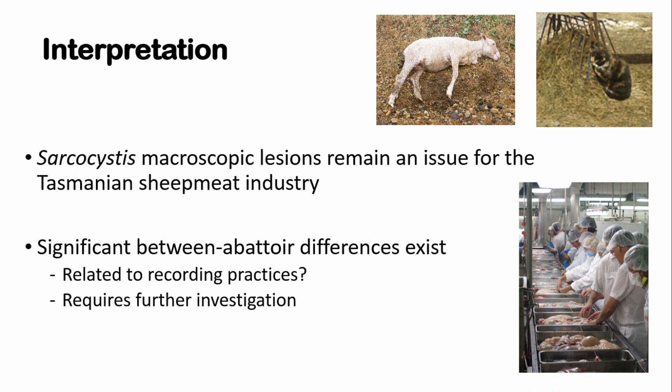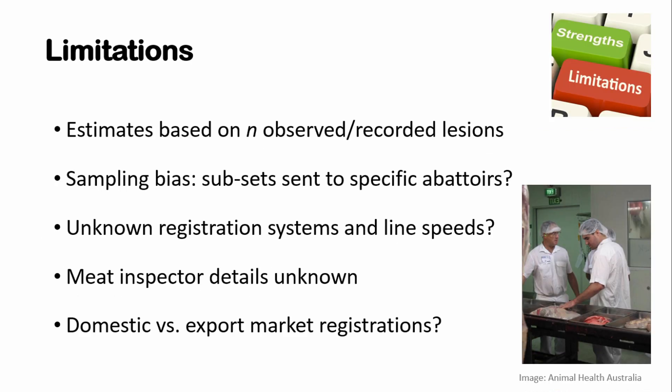My interpretation of this data: clearly these macroscopic lesions remain an issue for the Tasmanian sheep industry, and there are clear and significant differences between abattoirs. However, I have no opportunity to visit all the abattoirs and find out everything about recording practices. The estimates are based on recorded registrations of lesions, and there may well be some sampling bias — are certain sheep from certain properties sent to specific abattoirs on the mainland? A big factor is the unknown nature of registration systems and line speeds. If batches of sheep are going through very fast on the line, the ability to register lesions dramatically decreases.